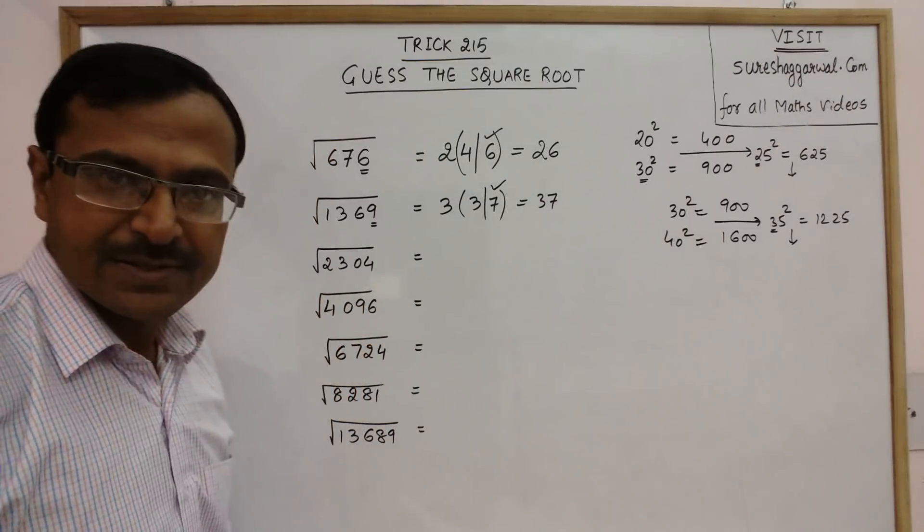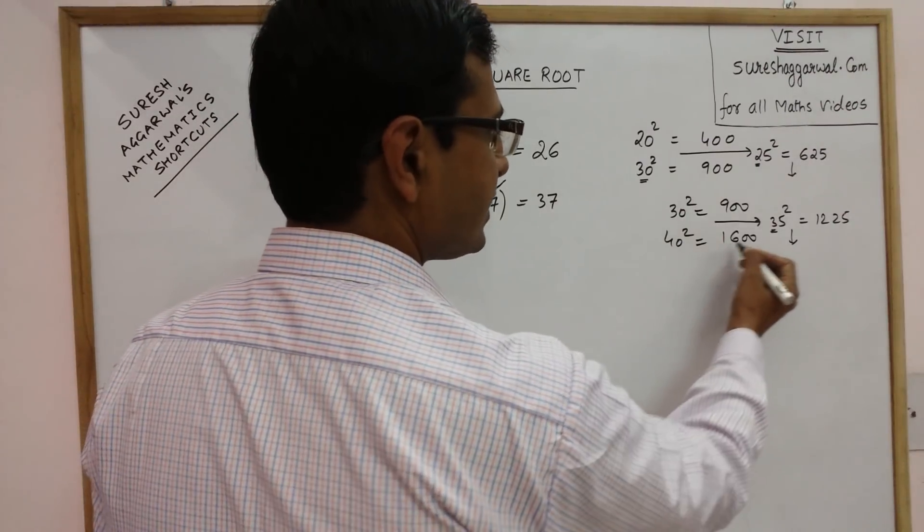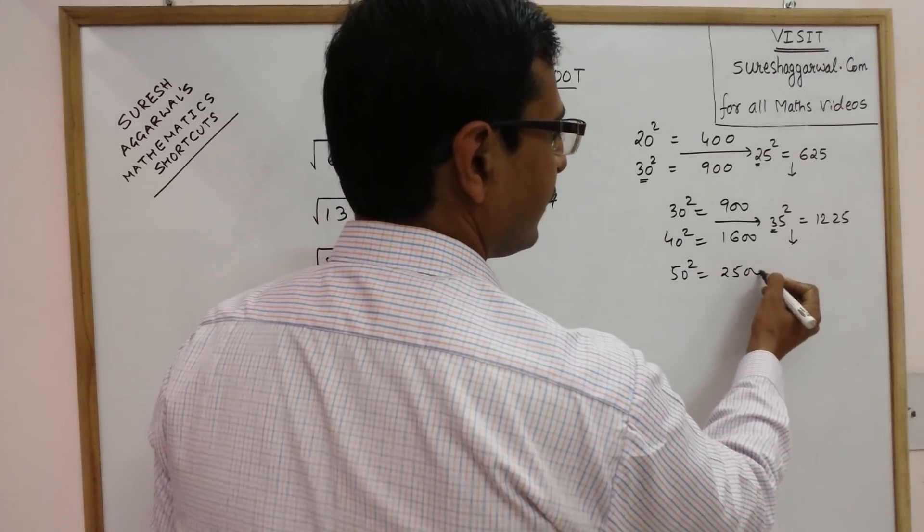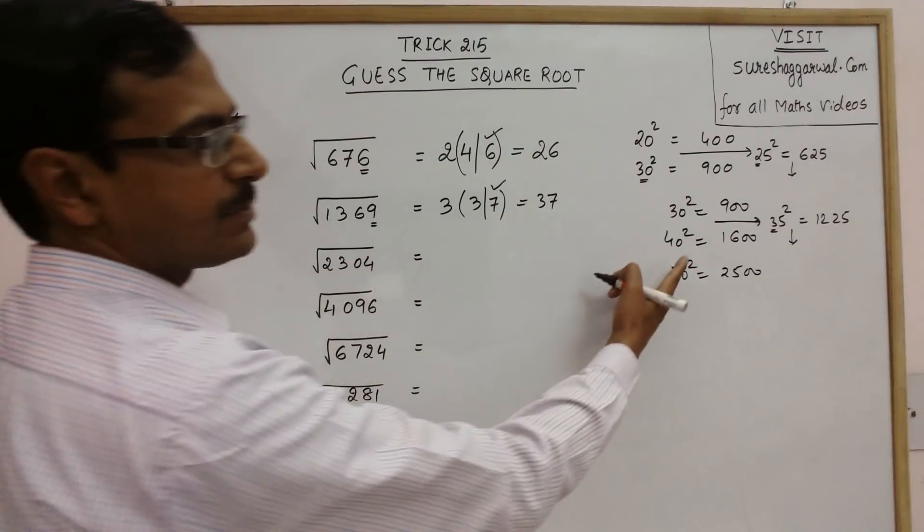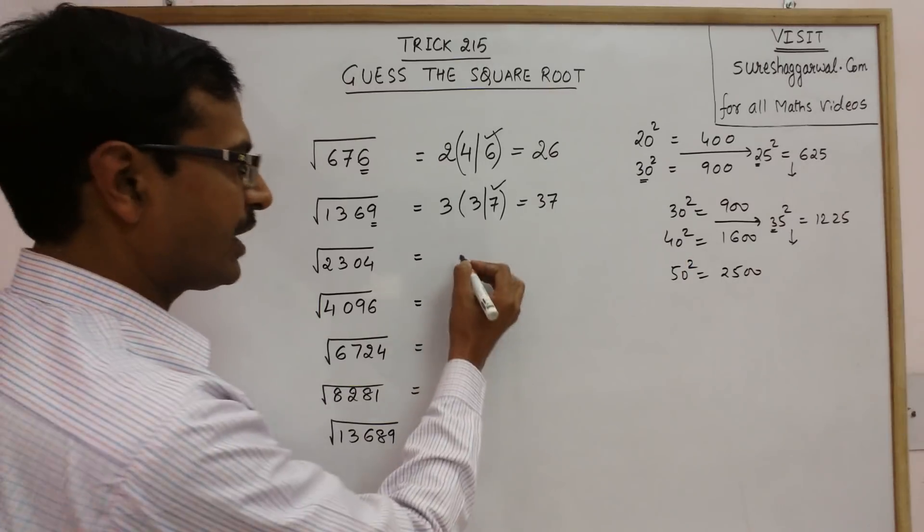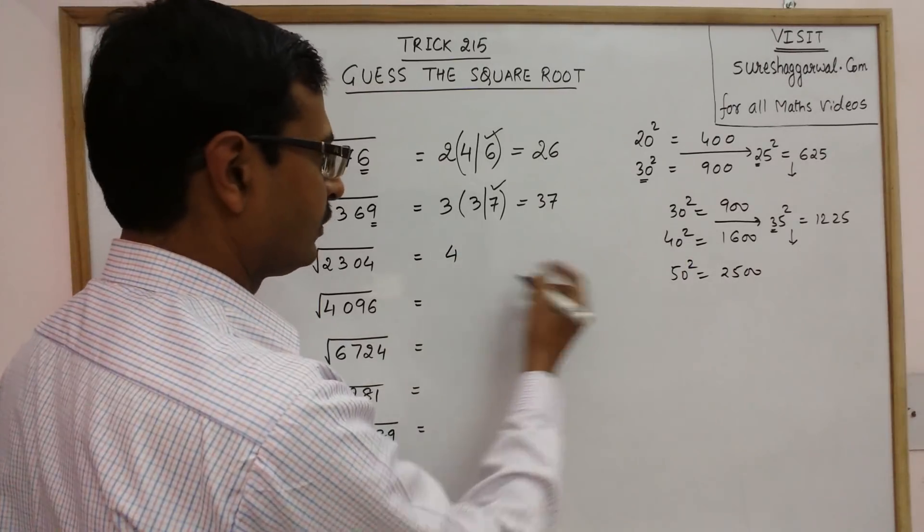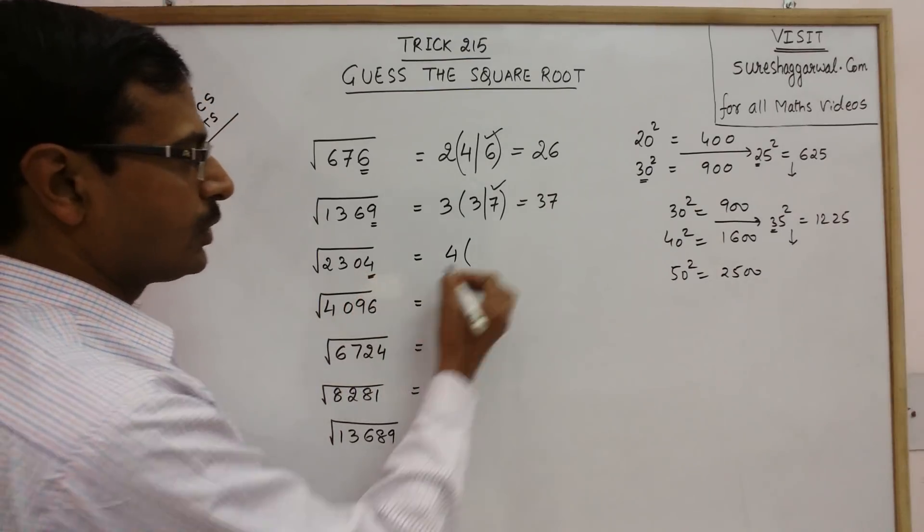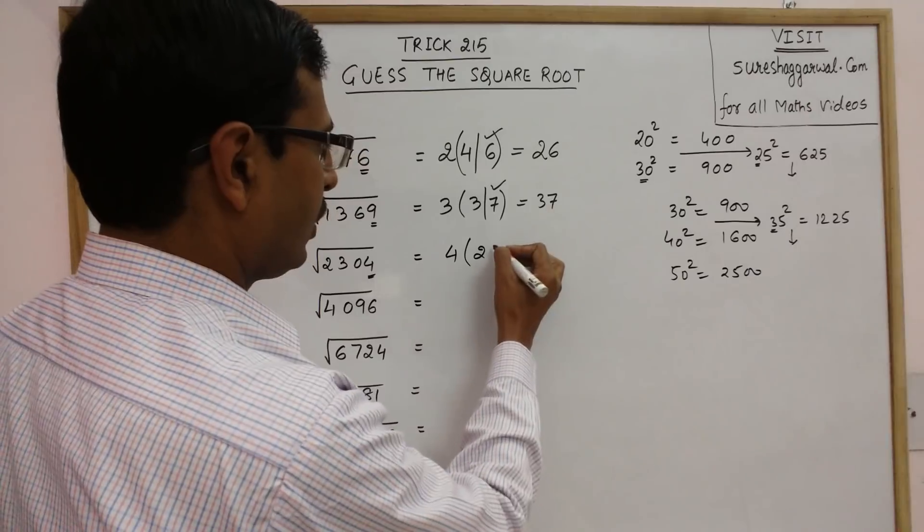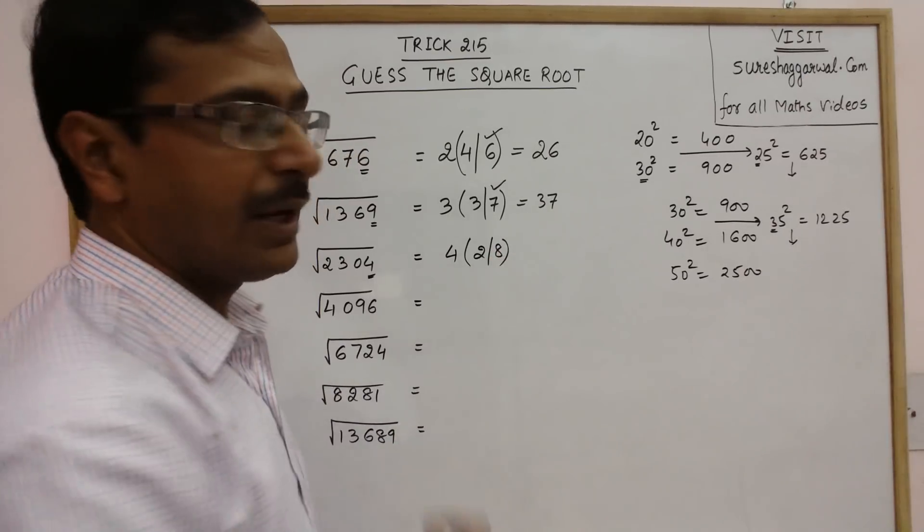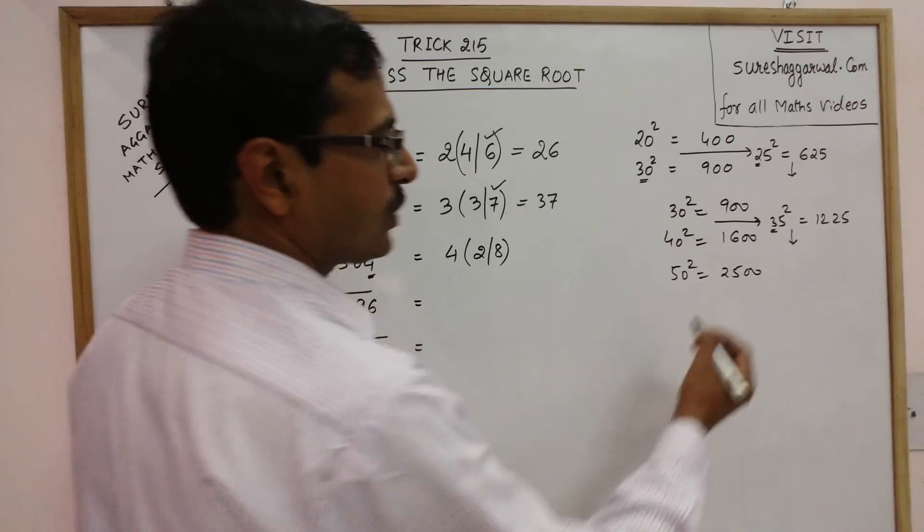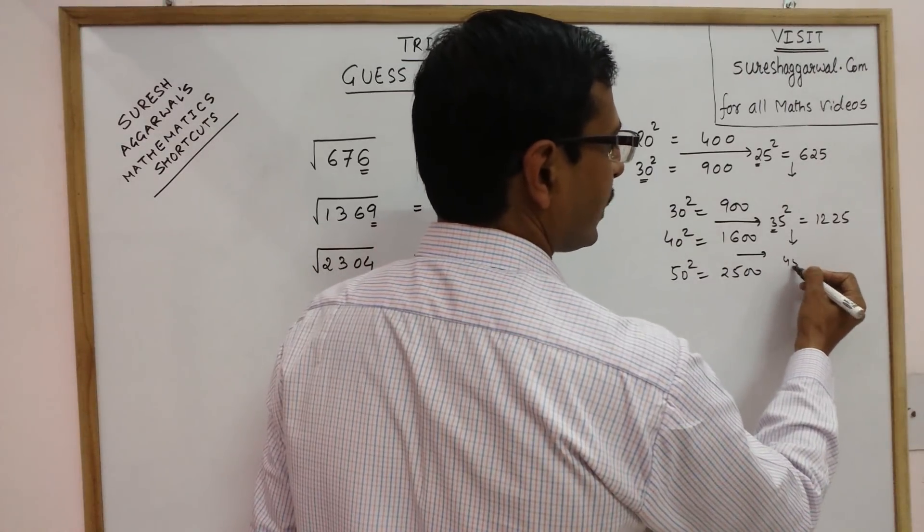Similarly, you can see this. See 40 square is 1600 and 50 square is 2500. So our number 2304 lies between these two. So our answer will start with 4. And unit digit is 4, so either it will be 2 because 2 square is 4, or 8 because 8 square is 64, so again unit digit is 4. So now see the intermediate number, 45 square.